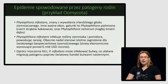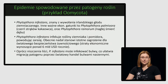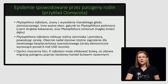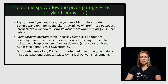Czy patogeny roślin mogą spowodować wymierne straty wśród ludzi? Historia pokazuje, że niestety mogą. Najbardziej znany przykład to wielki irlandzki głód ziemniaczany, wynikający z tego, że uprawy ziemniaków – stanowiące podstawę wyżywienia ludzi w Irlandii – zostały zaatakowane przez lęgniowca Phytophthora infestans. Ten lęgniowiec kiedyś był uważany za grzyba, ale teraz wiemy, że lęgniowce są bardziej podobne do alg.